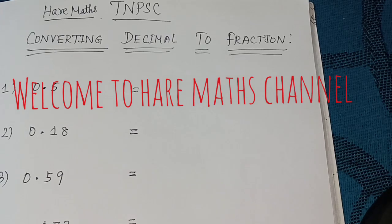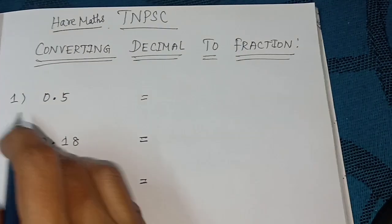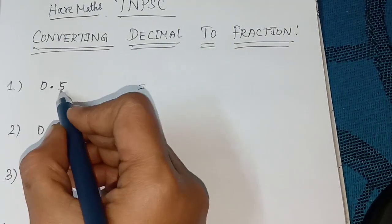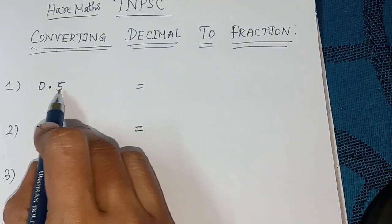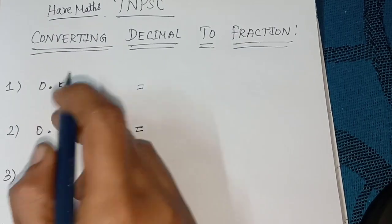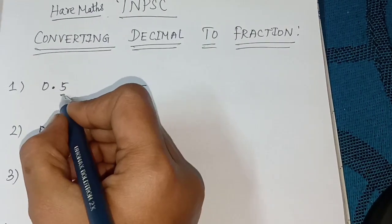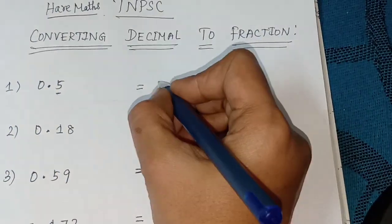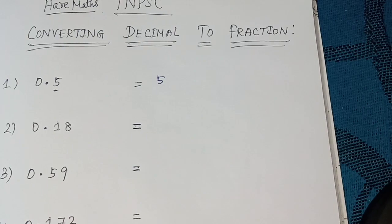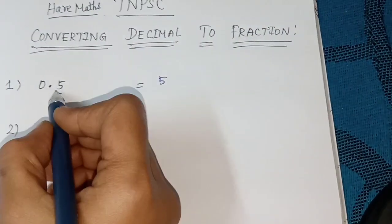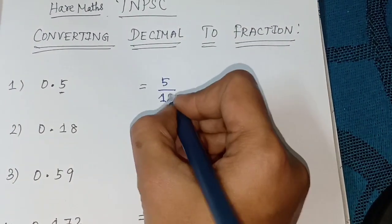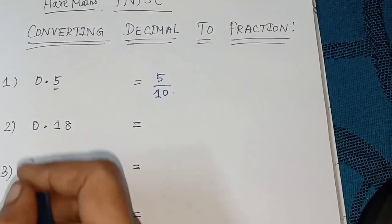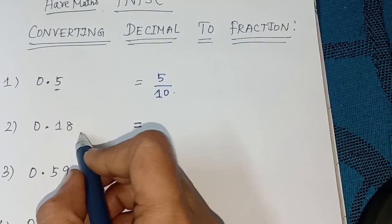First one, 0.5. The unit digit 5 place value is once tens, so 5 divided by 10. Second one, 0.18. The digit is a two-digit number, so 18 divided by place value once tens 100, which is 18 divided by 100.